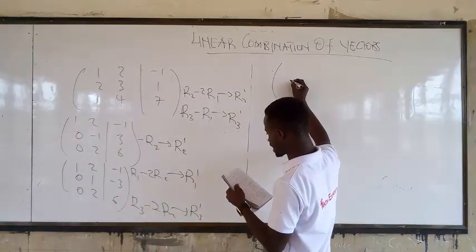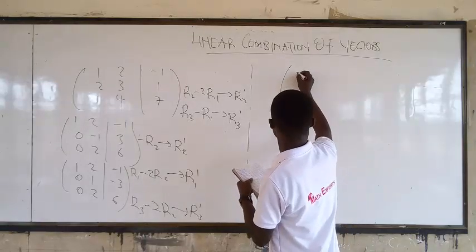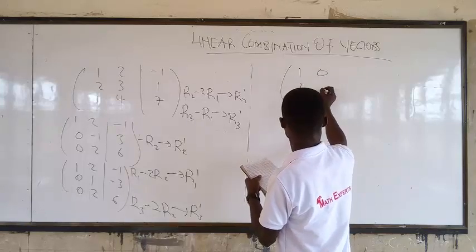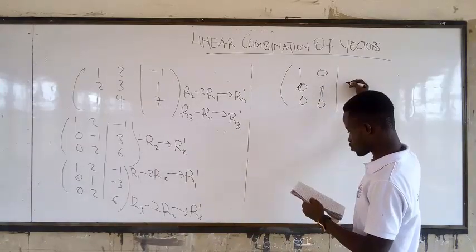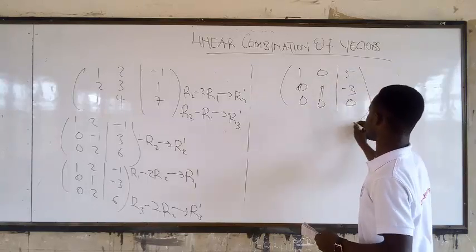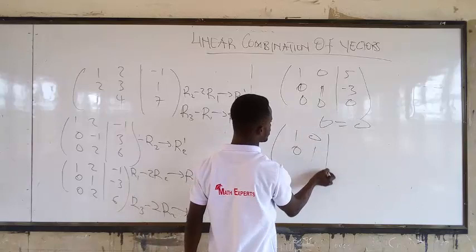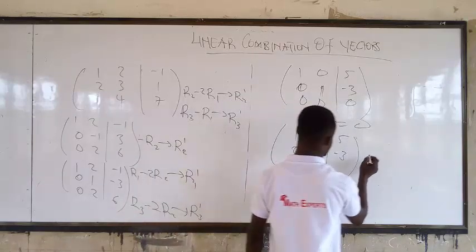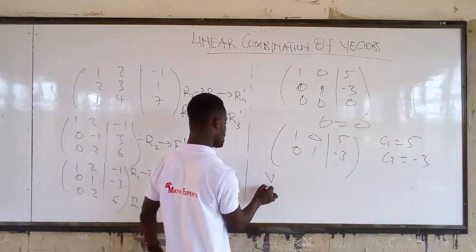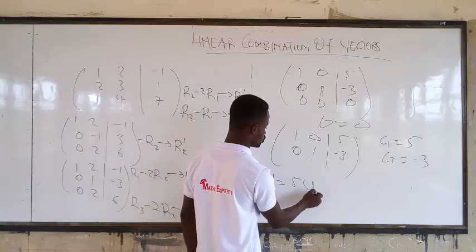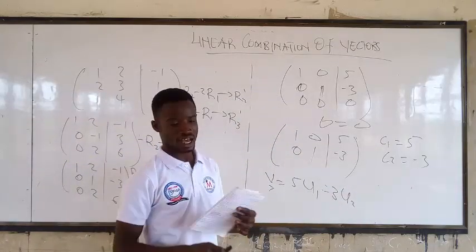So doing that, then we are going to get 1, 0, 0, 1, 0, 1, 1, 0, 1, 0, 0. Then you can use the calculator to test it's correct. So here we are going to get here to be 5, negative 3, 0. But here 0 is equal to 0 is true. So we can get 1, 0, 0, 1, 5, negative 3. So you can say that C1 is equal to 5, C2 is equal to negative 3. So it's possible. And if it's possible, we can write it in a linear combination as 5, U1, minus 3, U2. And that becomes the final answer for that.